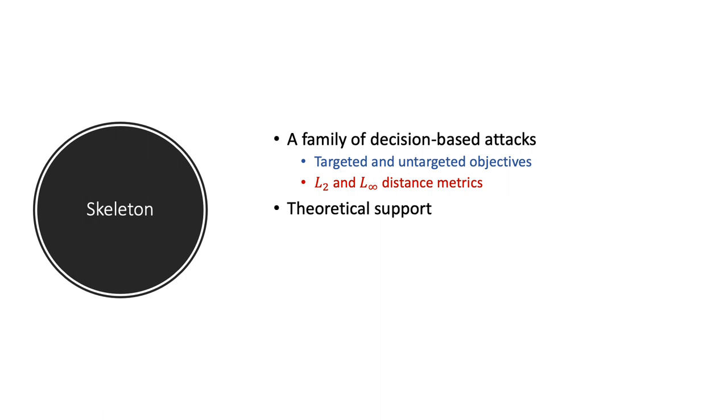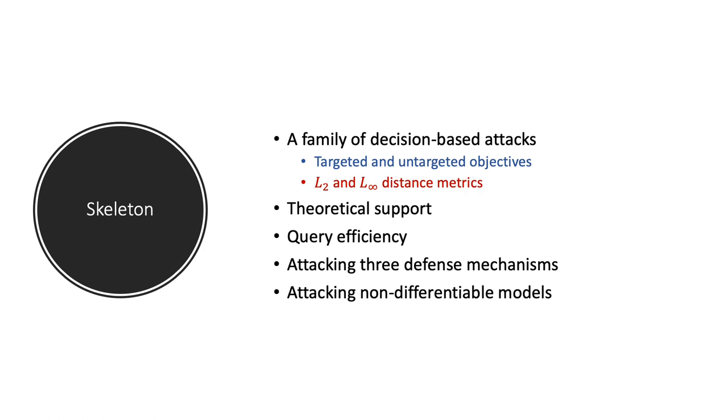In this talk, we will introduce a family of decision-based attacks. The proposed family includes both untargeted and targeted objectives optimized for L2 and L-infinity distance metrics respectively. It is based on a novel optimization algorithm with theoretical support. We will then show its query efficiency over existing decision-based attacks. It will be used to attack three defense mechanisms, and it is also capable of attacking non-differentiable models such as the random forest.